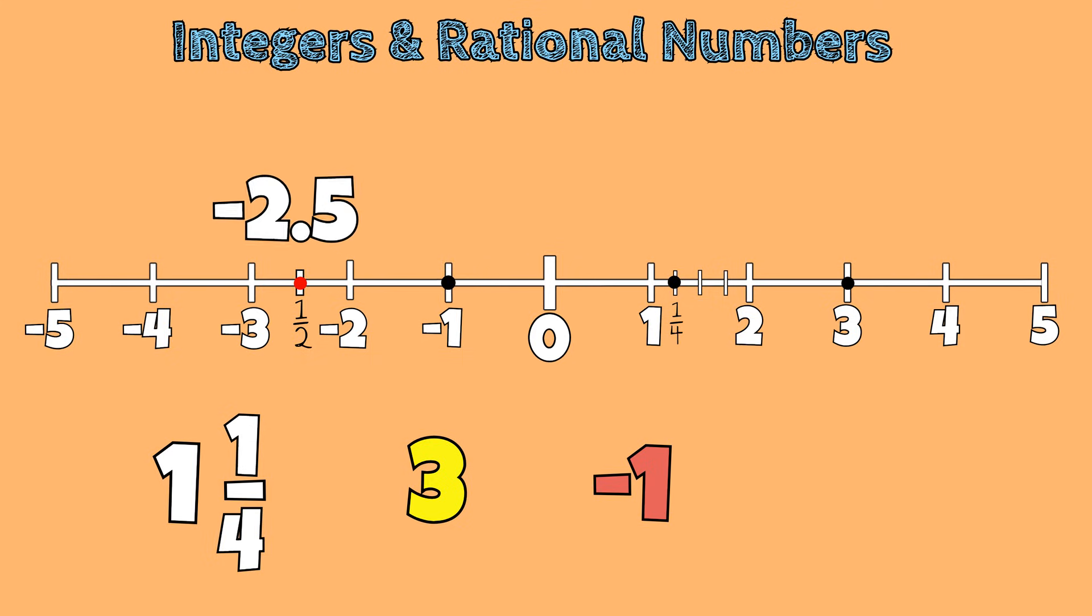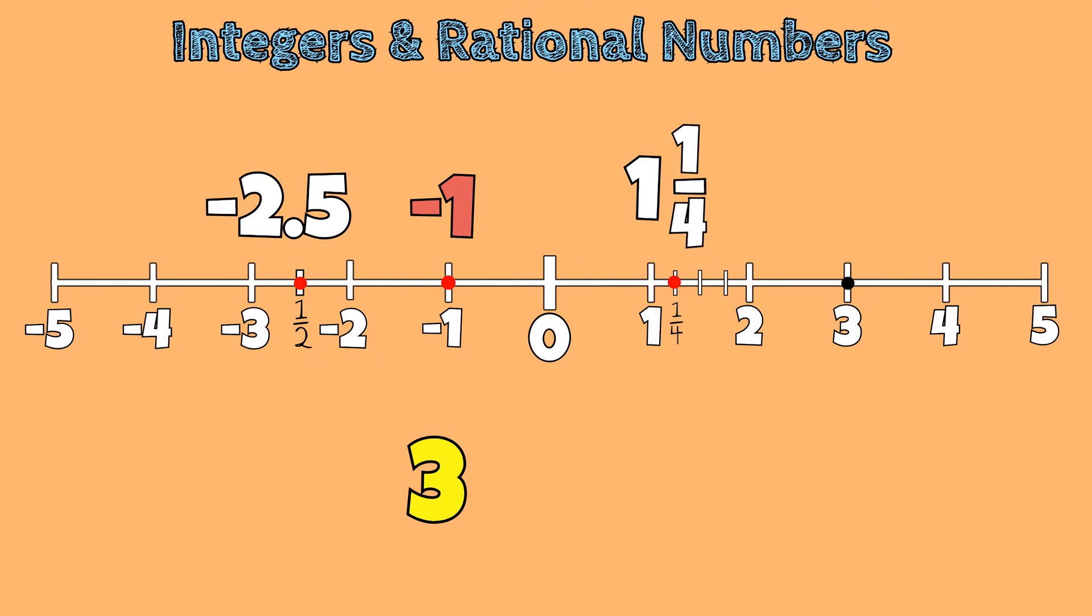In order from least to greatest, we have negative 2 and 5 tenths, negative 1, positive 1 and 1 fourth, and then 3.